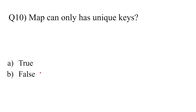Question 10: 'A Map can only have unique keys.' The answer is True. A Map cannot have two similar keys — all keys present inside a Map are unique. To clarify: Set has unique elements, and Map has unique keys, but Map can have duplicate values.